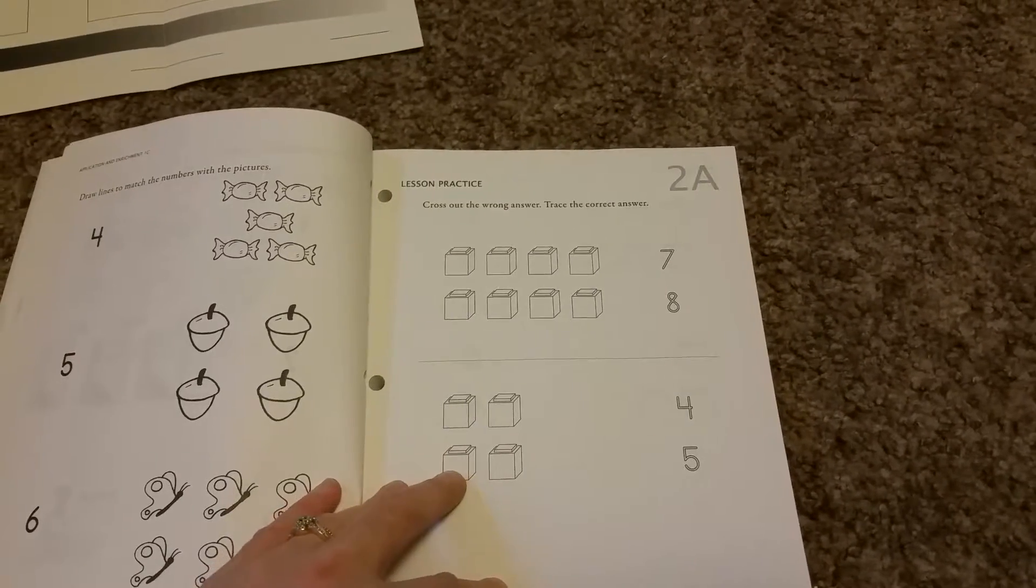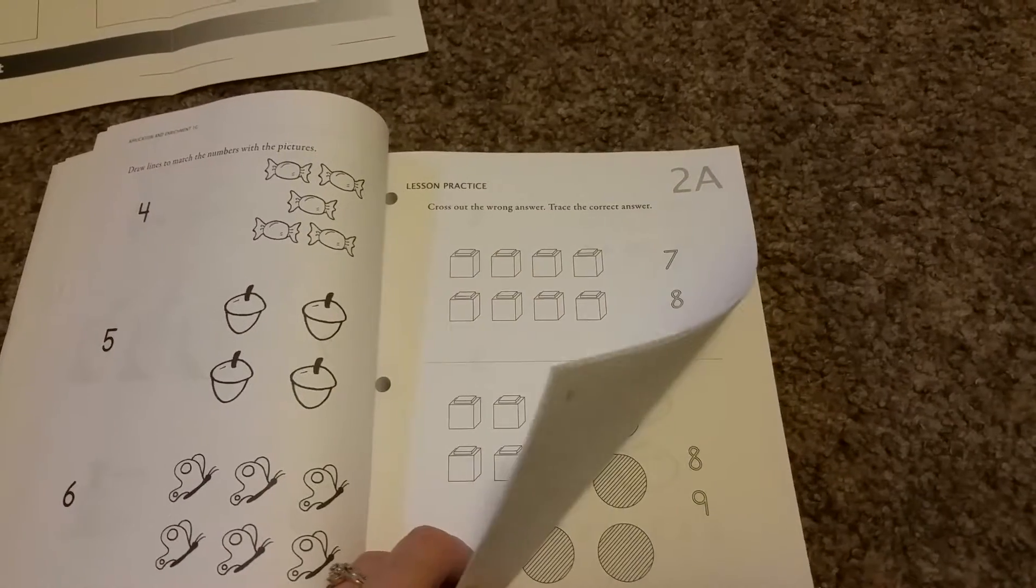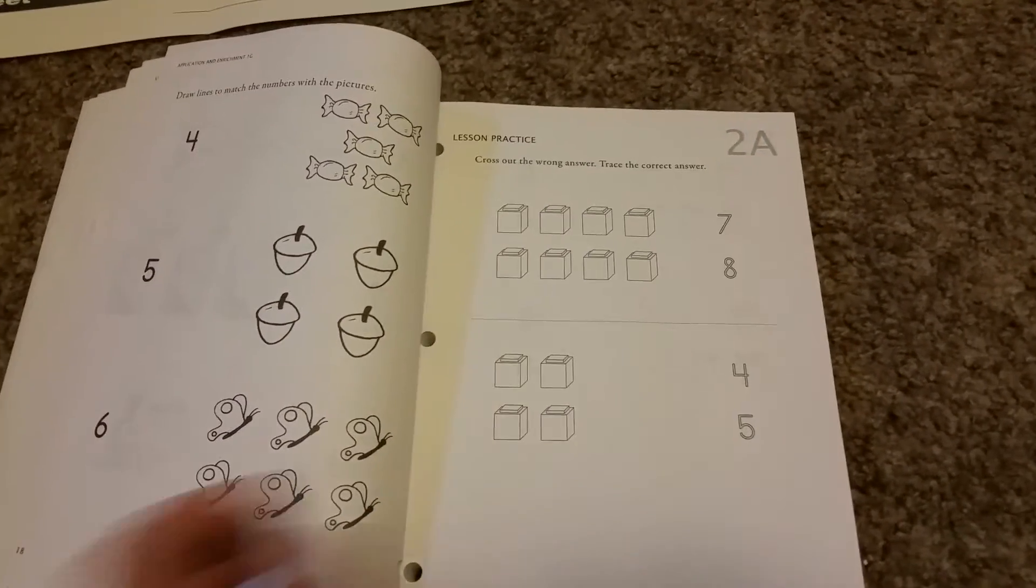And then the next week, same thing. You do A, B and C for one day. D, E and F for the review. And then the G. And that's basically it for kindergarten.